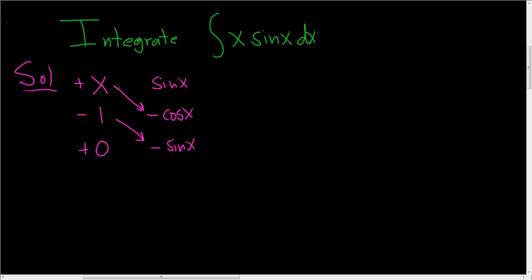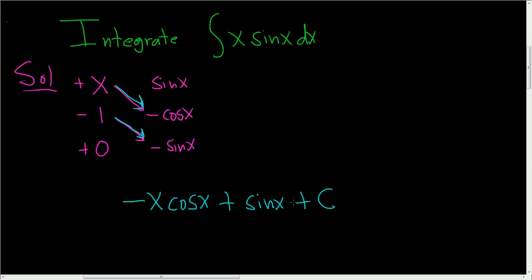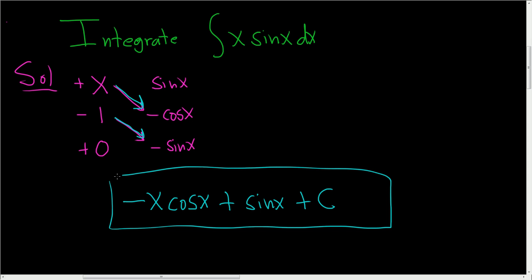Following the first arrow, it's going to be negative x cosine x. Then following the second arrow, it's plus sine x. And then we still have a plus C at the end. And that's it.